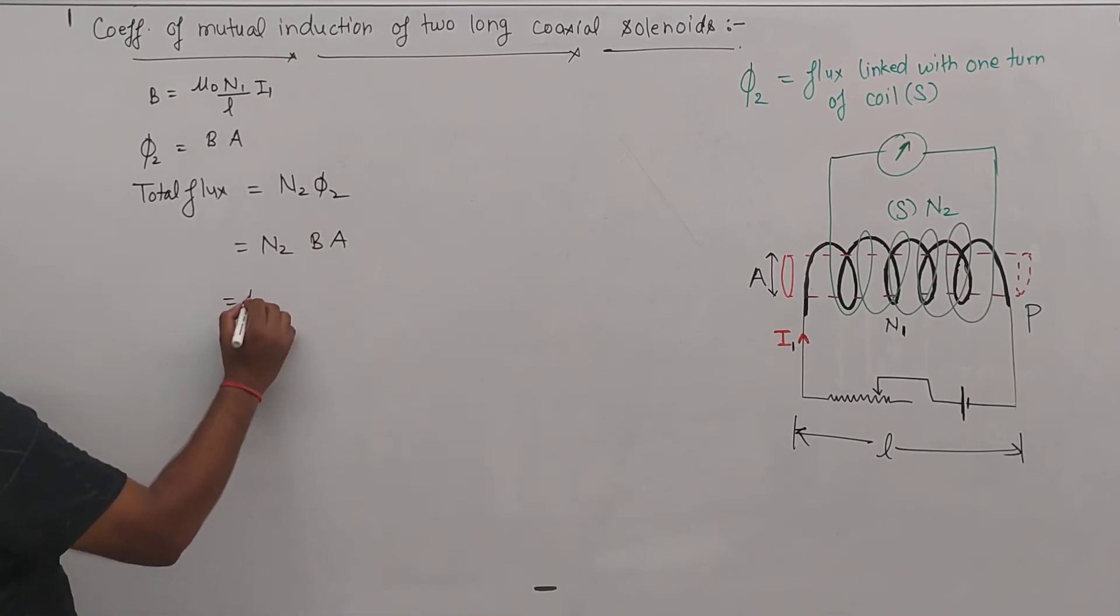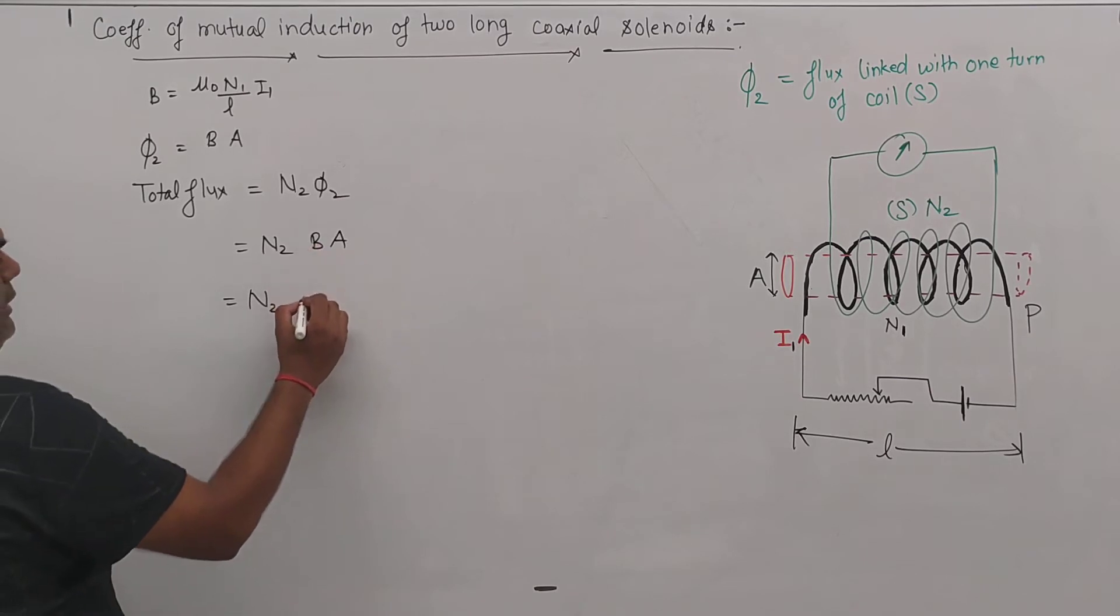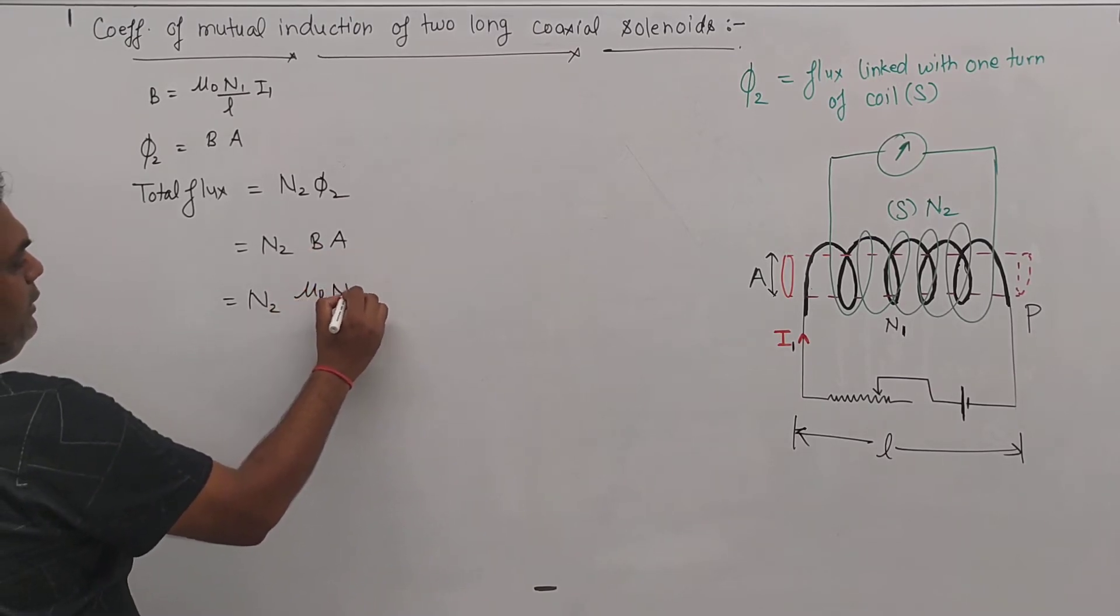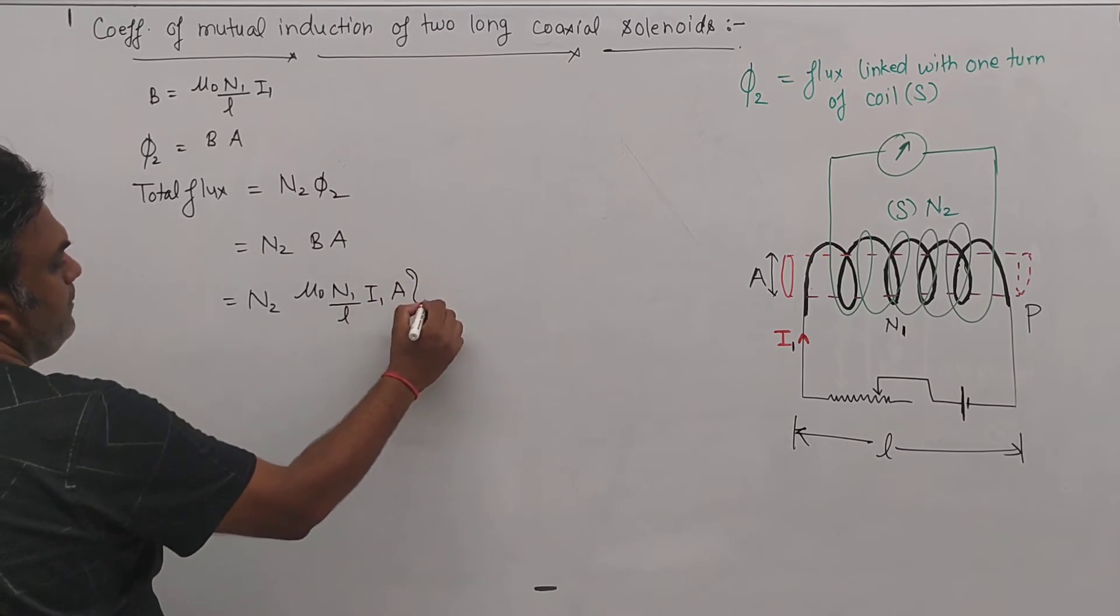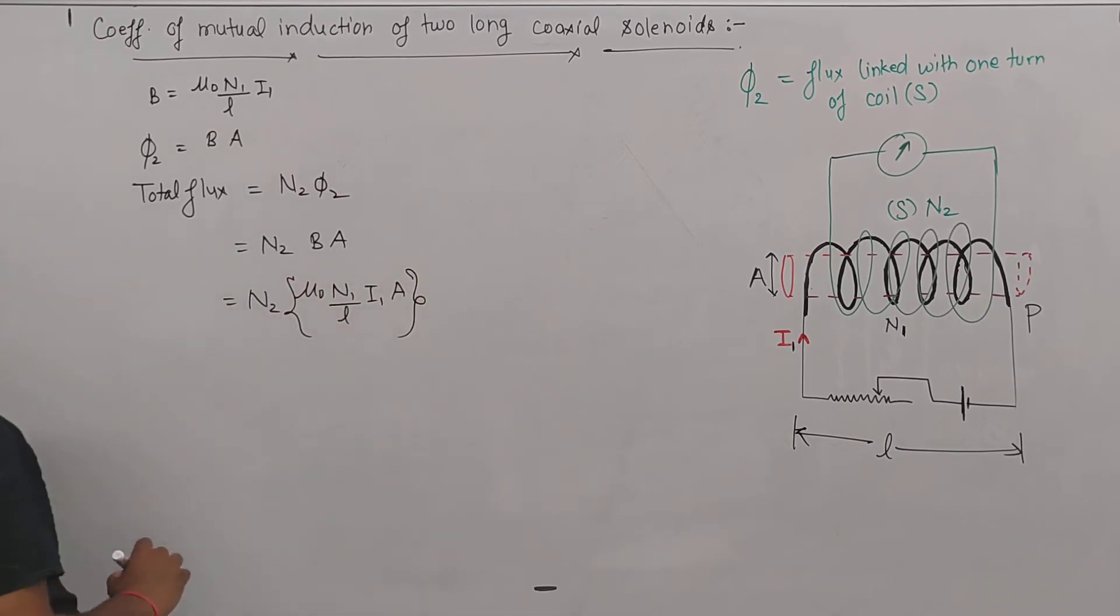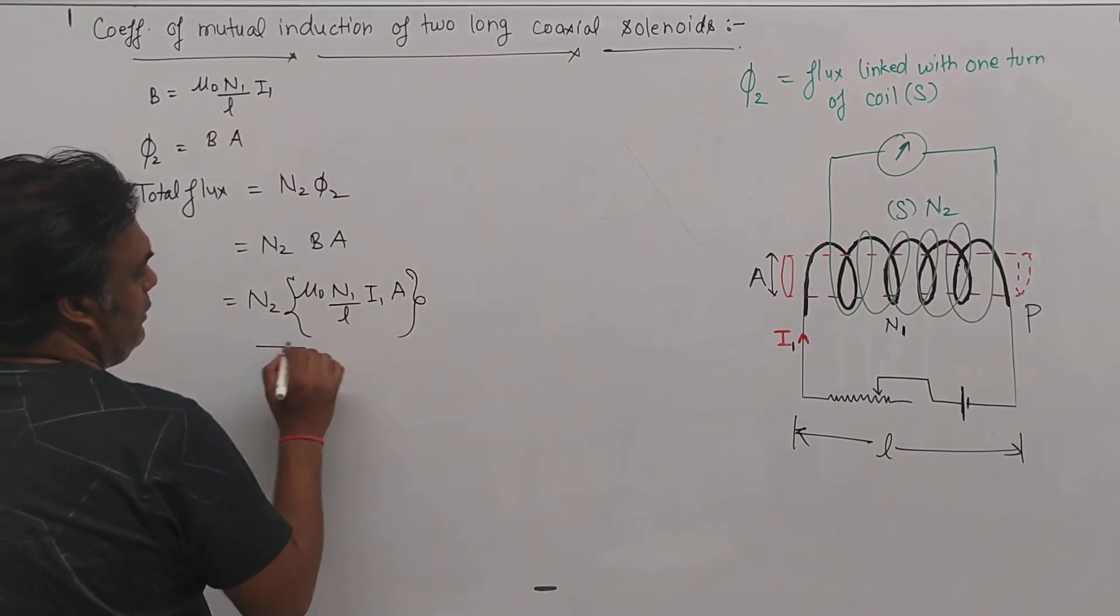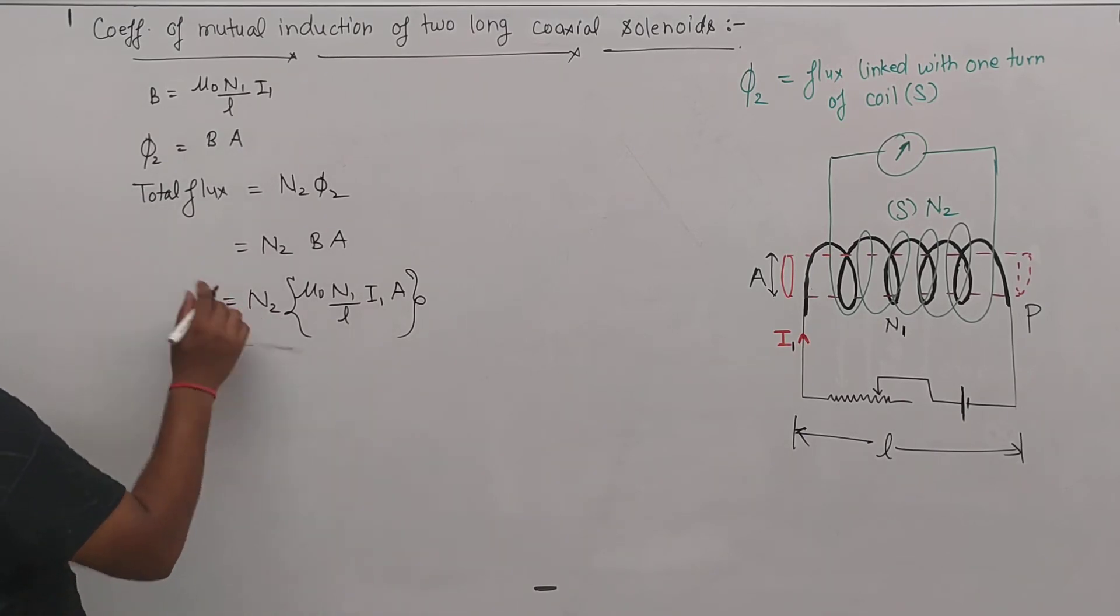So n2, magnetic field is μ₀n₁/l into i1 into A. This is the value of phi2. This is total flux.